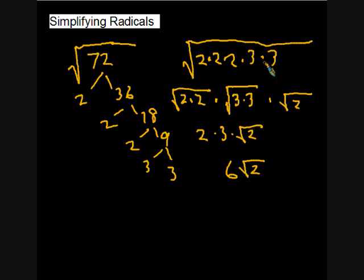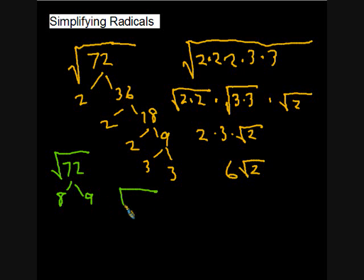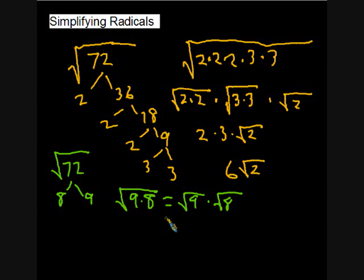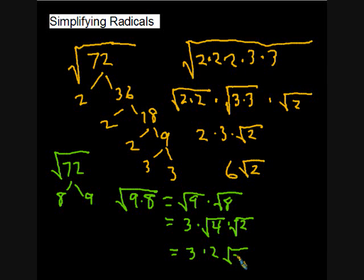There's another approach when the prime factor method gets inefficient. The square root of seventy-two can be broken up by dividing by eight to get nine. That gives square root of nine times square root of eight. Square root of nine is three. Square root of eight is the same as square root of four times square root of two, which equals two times square root of two. So we get three times two times square root of two, which is also six times square root of two — the same answer both ways.